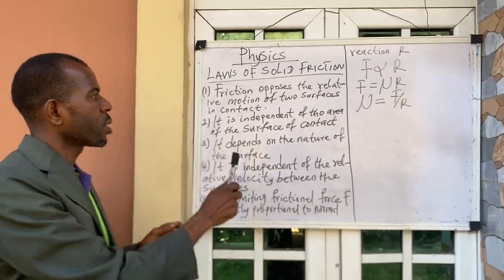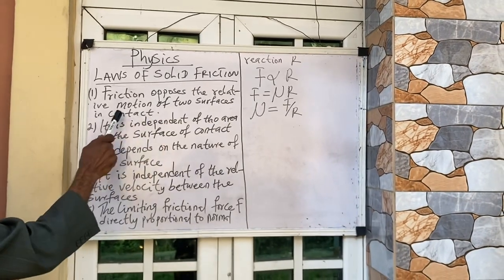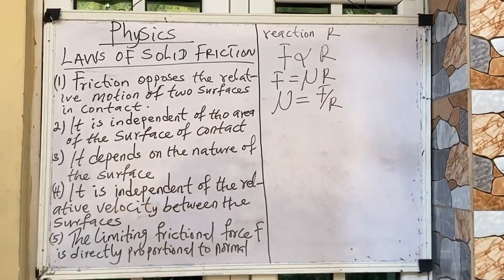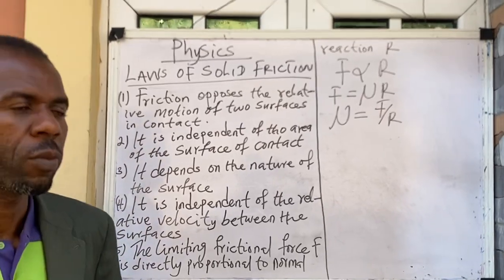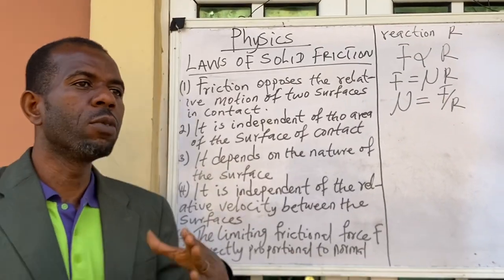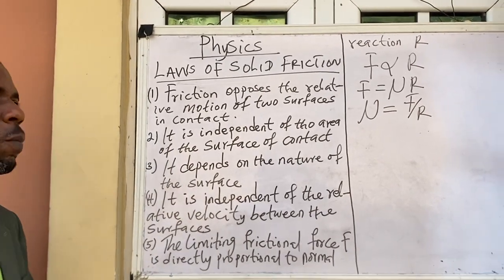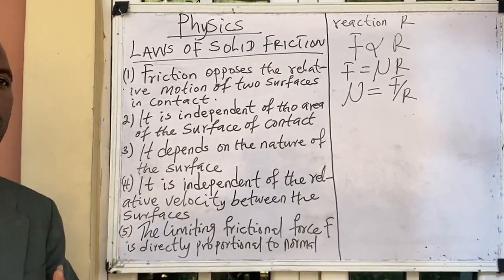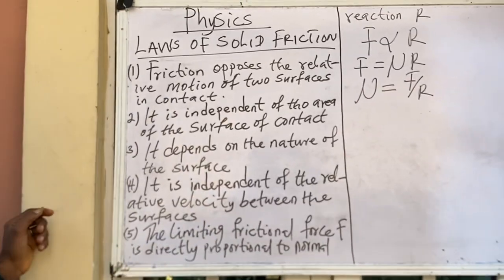Law number one says: friction opposes the relative motion of two surfaces in contact. That is to say, when a body tries to move over the other, there is a force that tries to stop it, forming a form of resistance. That is what that law is talking about.